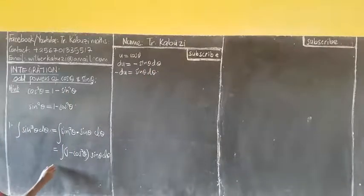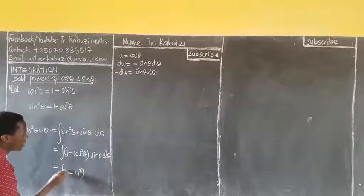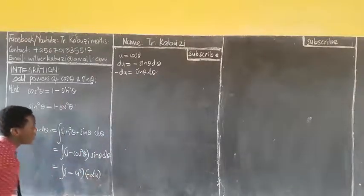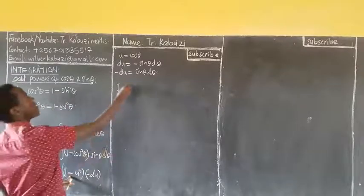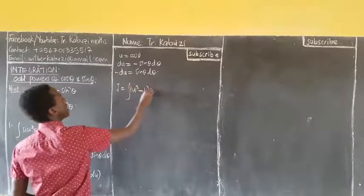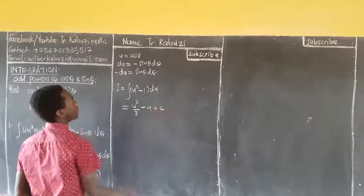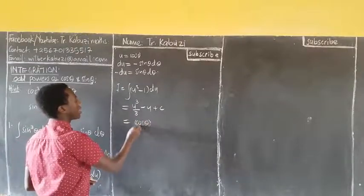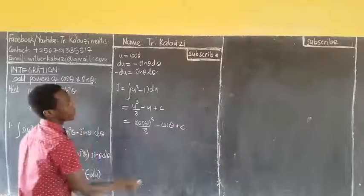Now if we bring it back, we shall have the integral of (1 − u²)(−du). Opening the brackets, my integral becomes the integral of u² − 1 du. Integrating this gives u³/3 − u + C. But we know u = cosθ, so the answer is cos³θ/3 − cosθ + C. That's how we integrate sin³θ.